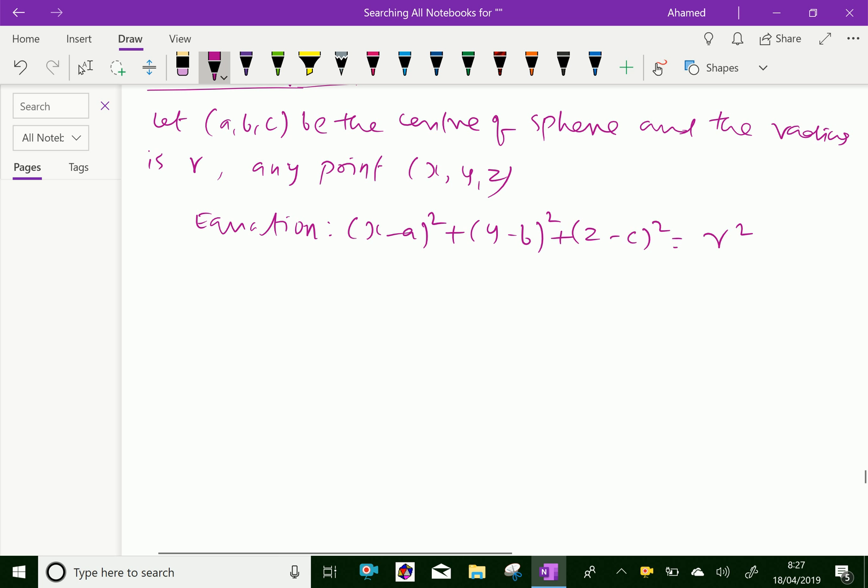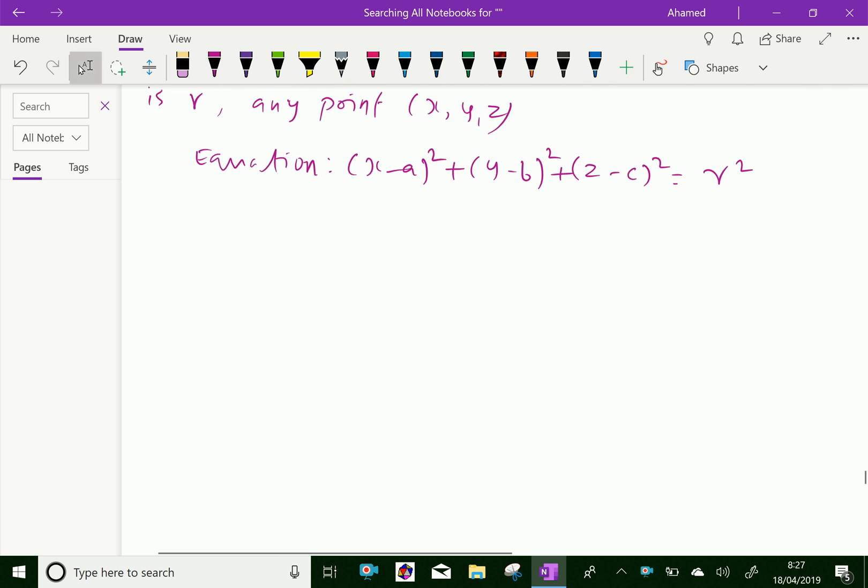Now expanding and simplifying we will get x square plus y square plus z square minus 2ax minus 2by minus 2cz plus a square plus b square plus c square minus r square equal to 0 is the equation of a sphere.